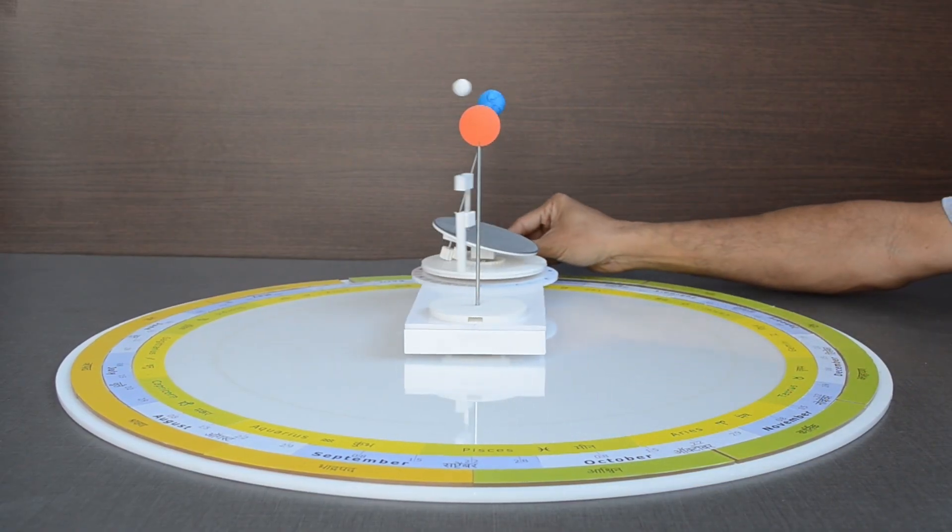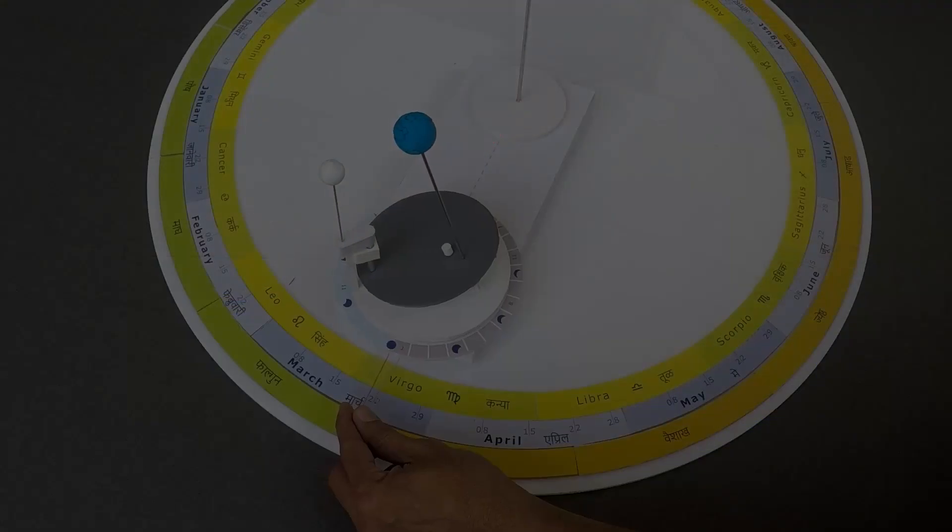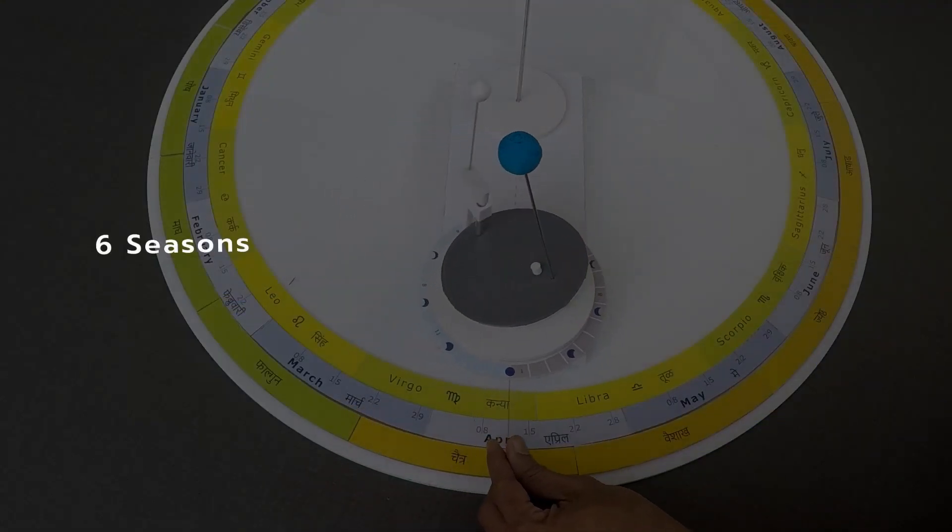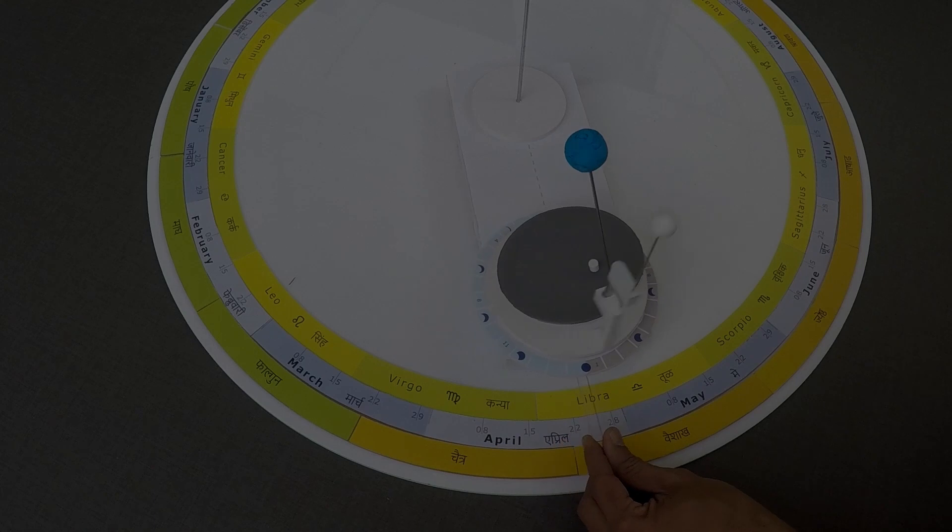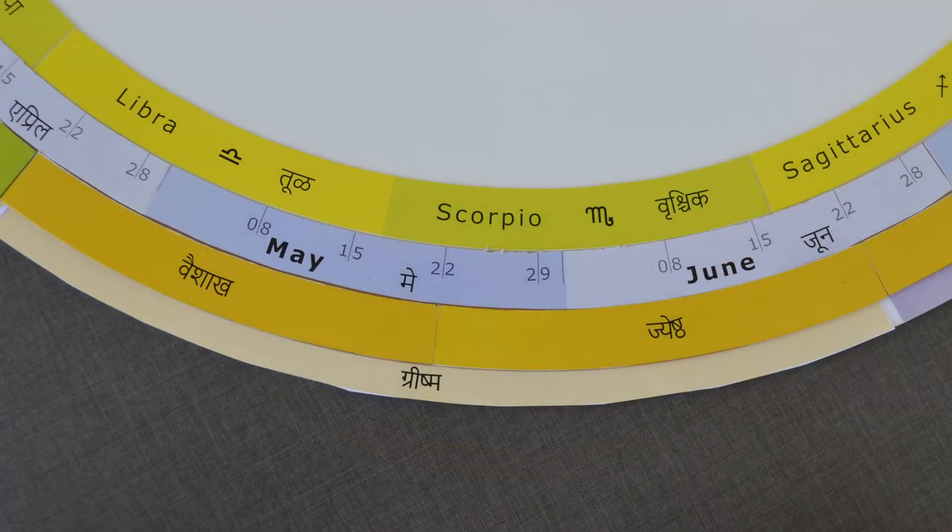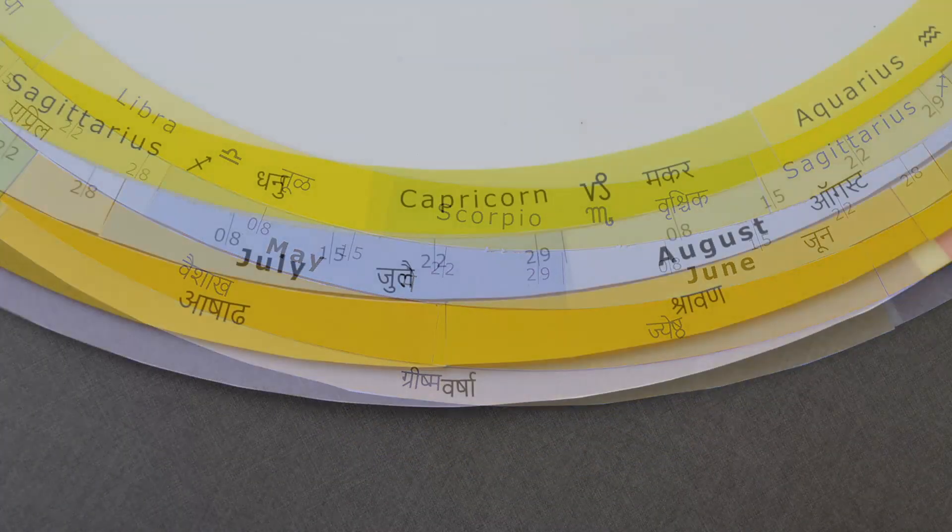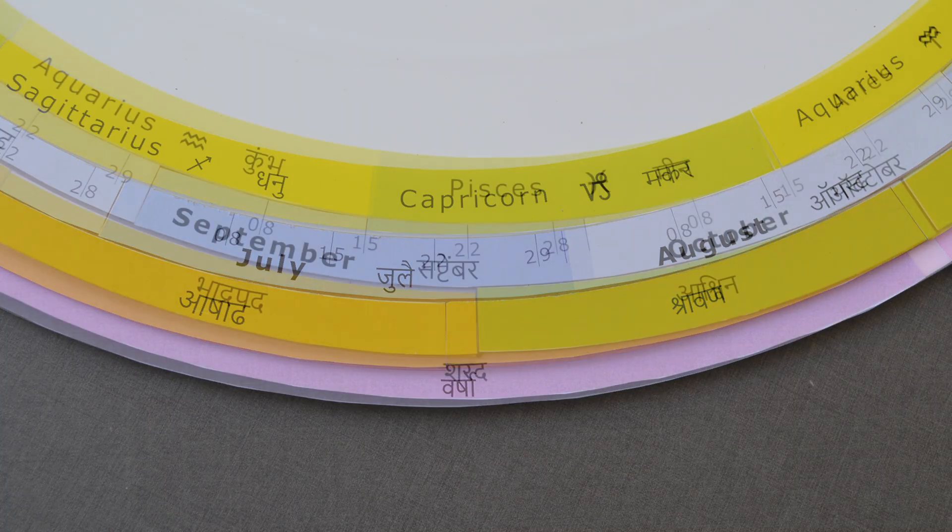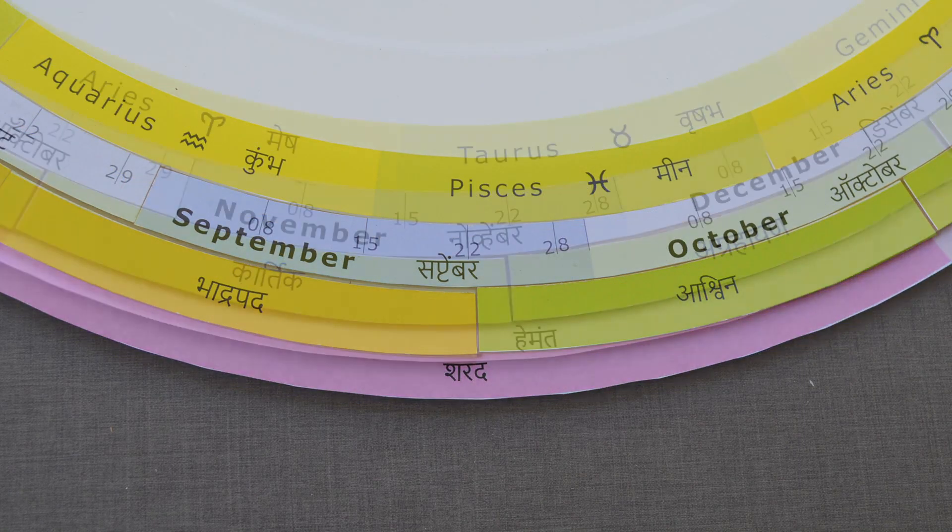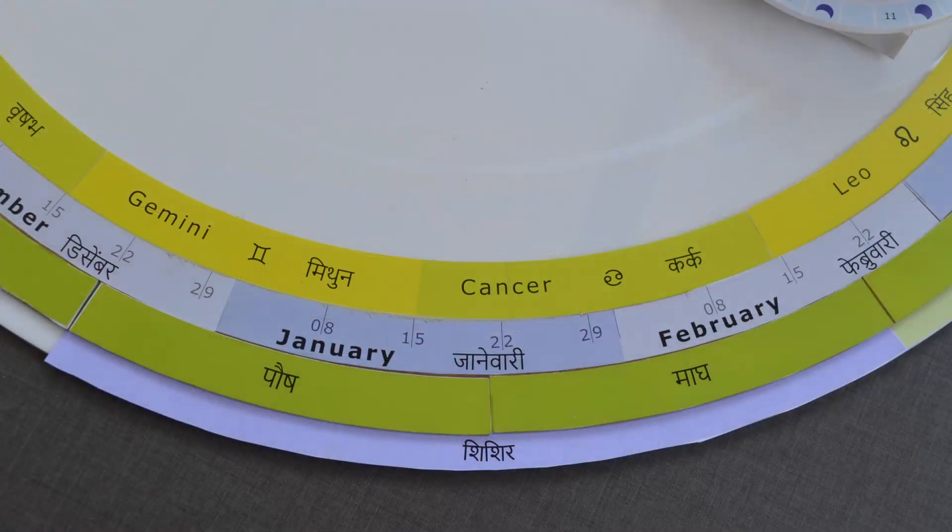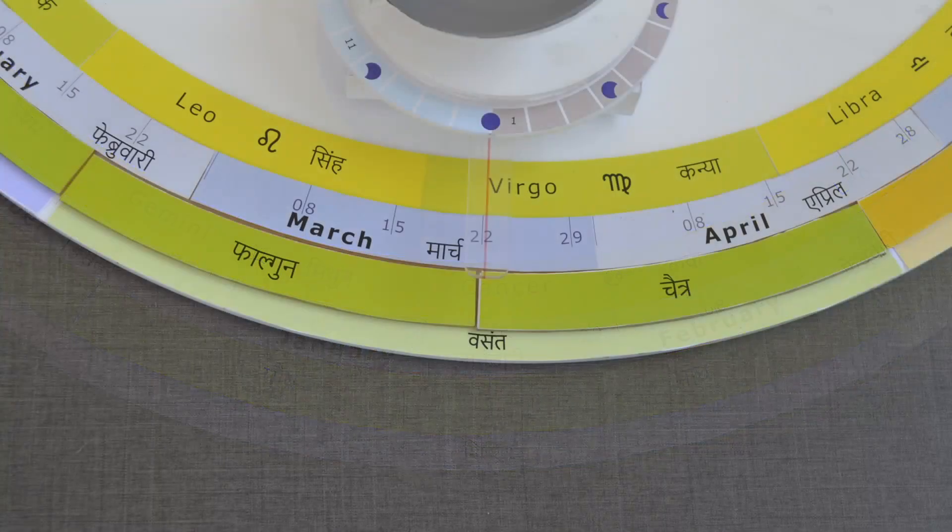How about seasons? National Solar calendar has identified 6 seasons associated with 2 months each. These seasons are Grishma, Varsha, Sharat, Hemant, Shishir and Vasant.